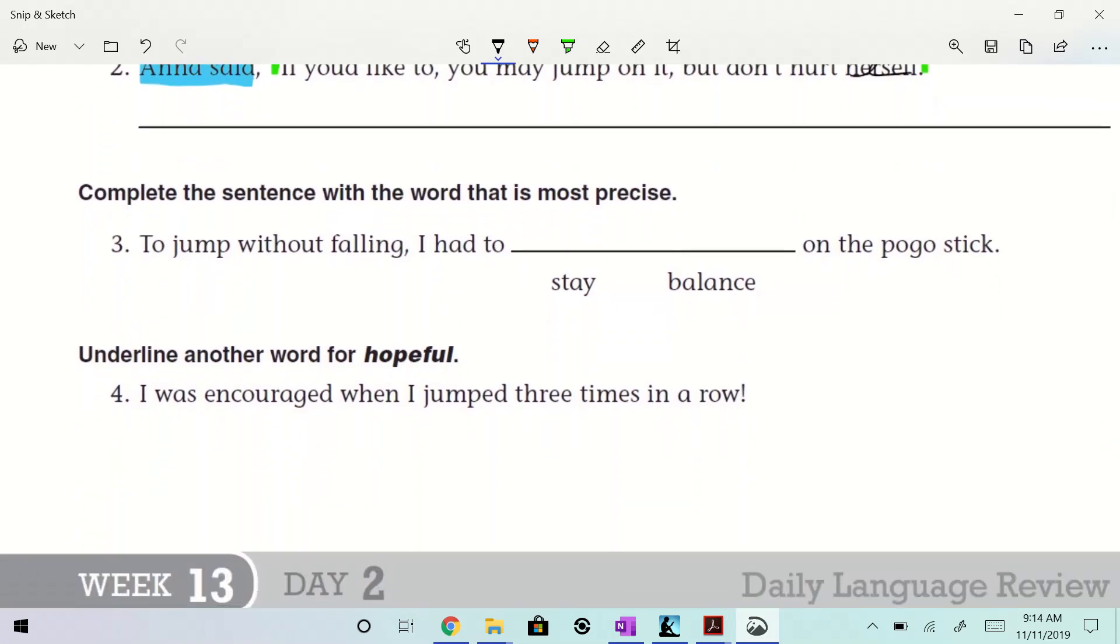Complete the sentence with the word that is most precise. Balance, to jump without falling, I had to stay on the pogo stick. That's just okay. So, you stayed up there, but balance tells what you did to stay up there, right? Yeah. Yeah, all right. So, balance is the word, right? Is the more precise word, right?